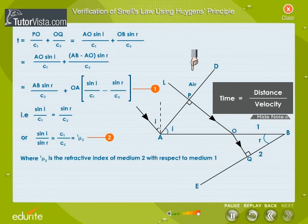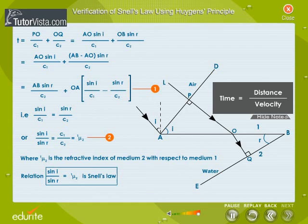For example, when medium 1 is air and medium 2 is water, the relation sine I by sine R equals 1 mu 2 is Snell's law.